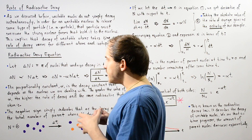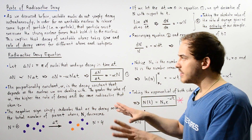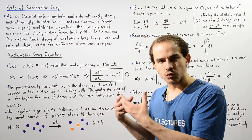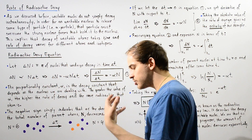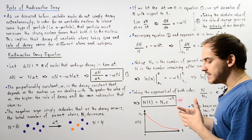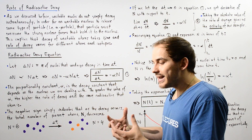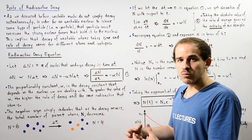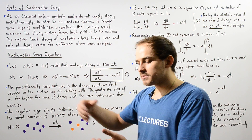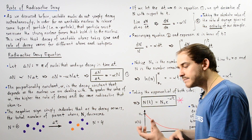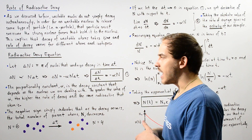So let's begin by defining a certain quantity. In this lecture, our goal will be to derive and define an equation known as the radioactive decay equation, or the radioactive decay law. This equation describes how many unstable nuclei we have left that have not yet decayed after some time T, and also how many nuclei have actually decayed after some time T.